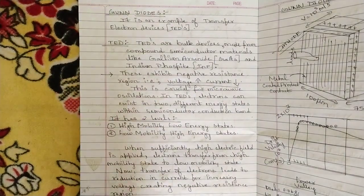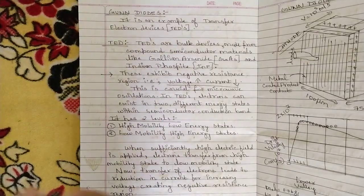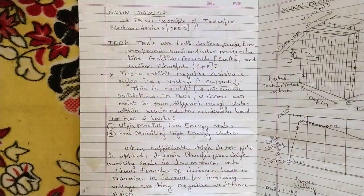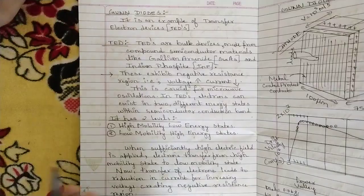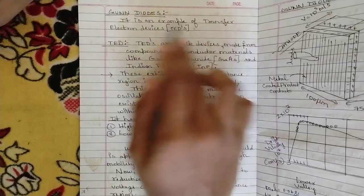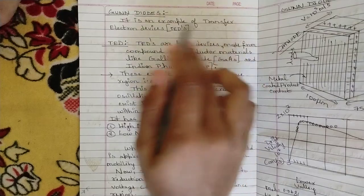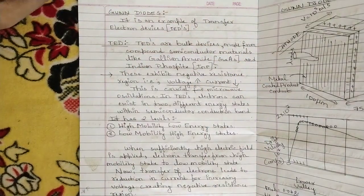The concept of Gunn diodes — spelled G-U-N-N — is named after a scientist. The diode is named after him because it somehow matches his characteristics. Gunn diodes are an example of Transfer Electron Devices, abbreviated as TED.